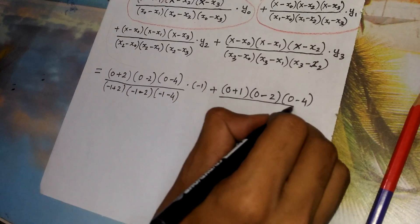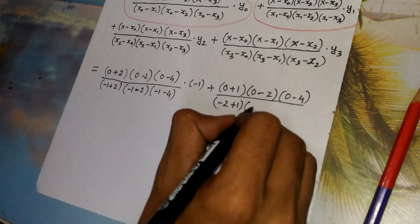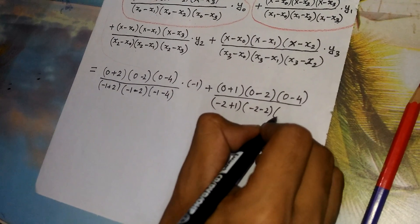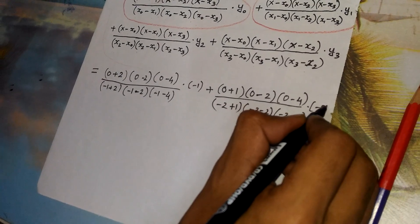Divided by minus 2 plus 1 multiplied by minus 2 minus 2 and minus 2 minus 4 whole multiplied by minus 9.